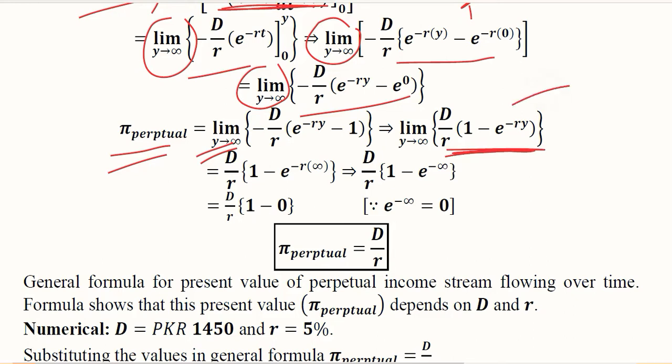You remember that this was the present value of the cash flow in the last example where the upper time limit was y. So here it is y but it is approaching to infinity, that is an undefined period of time.